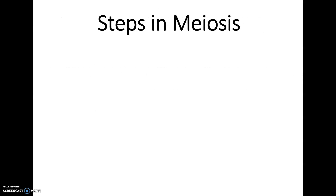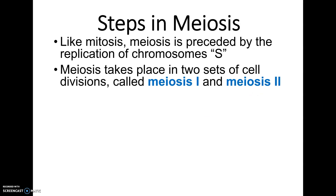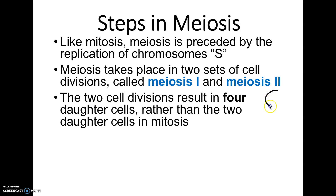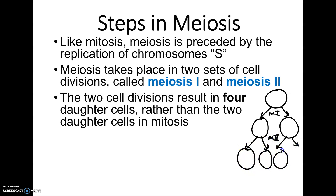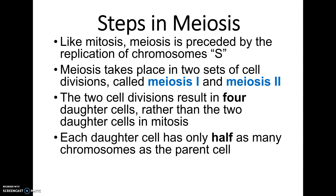Meiosis and mitosis both start with a normal S phase in the cell cycle. Meiosis is then divided into two phases: meiosis I and meiosis II, with two separate cell divisions. Meiosis I cuts the chromosome number in half, producing two cells. Meiosis II is a second division, resulting in a total of four cells. Each daughter cell ends up with only half the chromosome number of the parent cell — unlike mitosis, which makes exact copies.